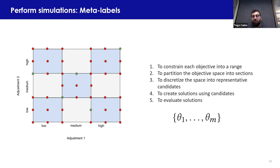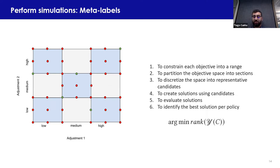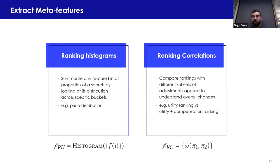To extract meta features, we look at ranking histograms and ranking correlations. Ranking histograms summarize any feature of a search — for instance, the price distribution. Ranking correlations look at scores in different ways to understand how much an adjustment impacts the overall ranking and how useful it is to predict the weights for said adjustments.